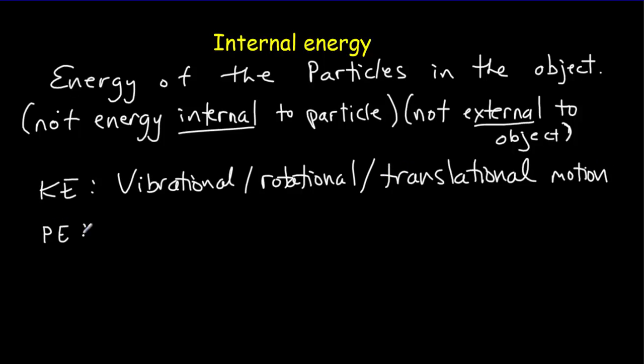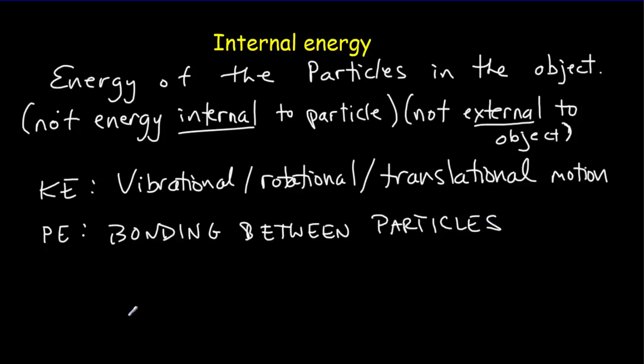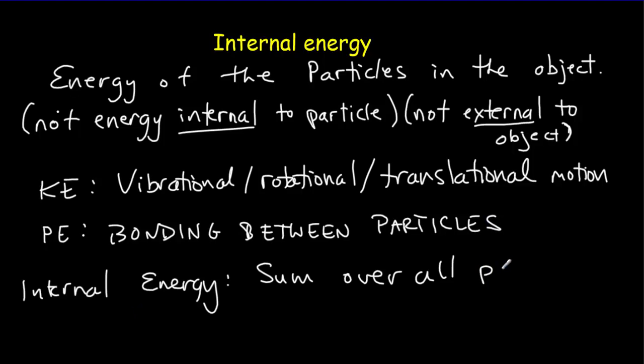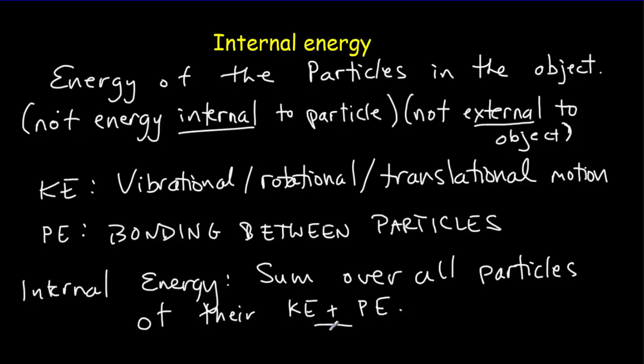When we think about the potential energy of these particles, they have potential energy because they're in fields — the important one being the field of one another. In other words, there's a potential energy there because of the bonding between the particles. So when we talk about internal energy, we're talking about the sum over all particles of their kinetic energy plus their potential energy — every particle's kinetic energy and potential energy, summed across all particles in the whole object.